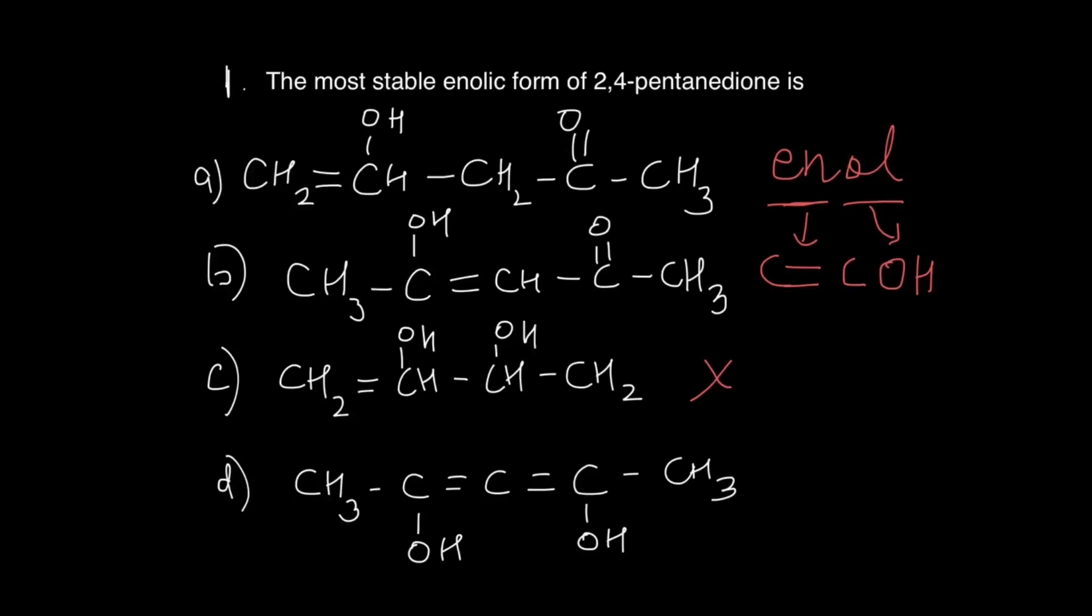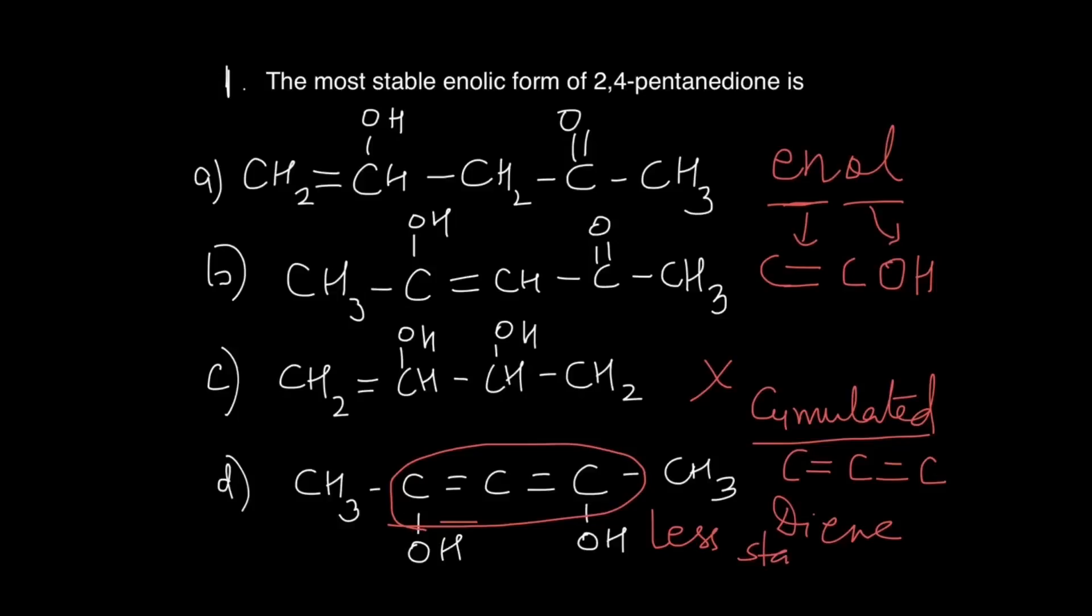Now let's take a look at option number D. I want you to see this portion here where we have something like C double bond C double bond C. This thing is known as a cumulated diene. Cumulated dienes are very less stable. So this is also not correct.